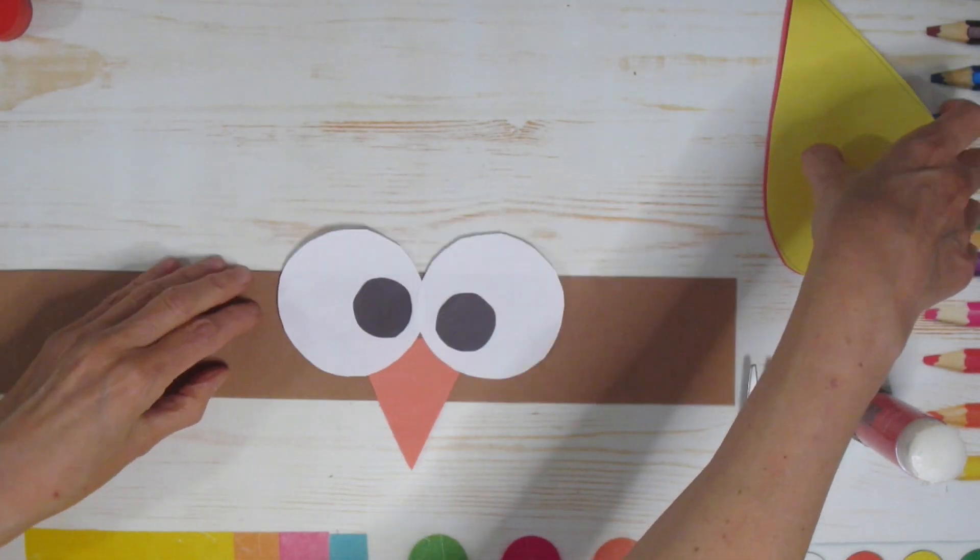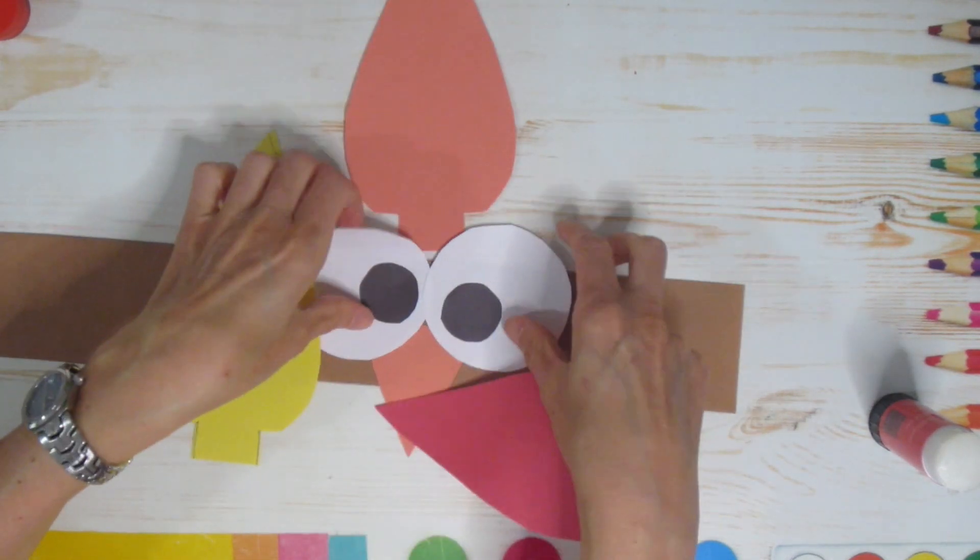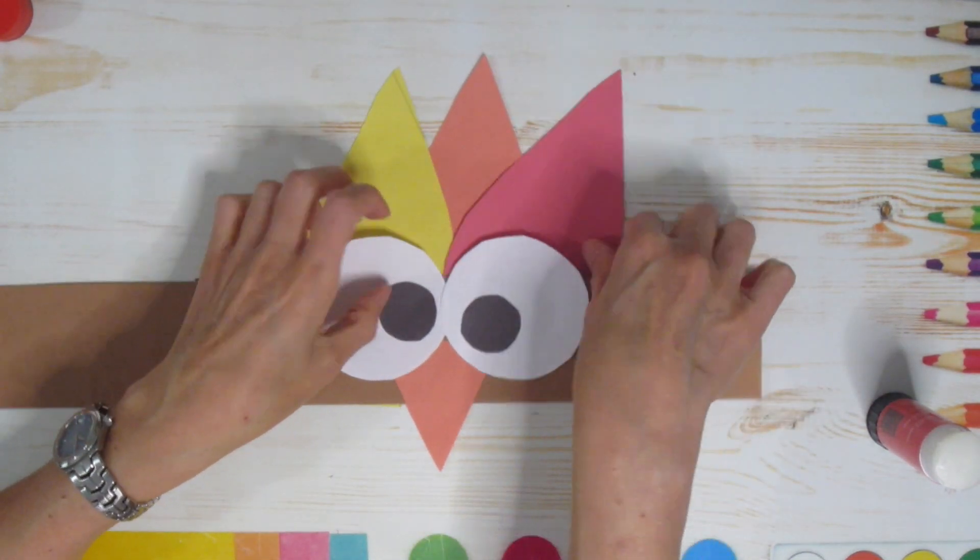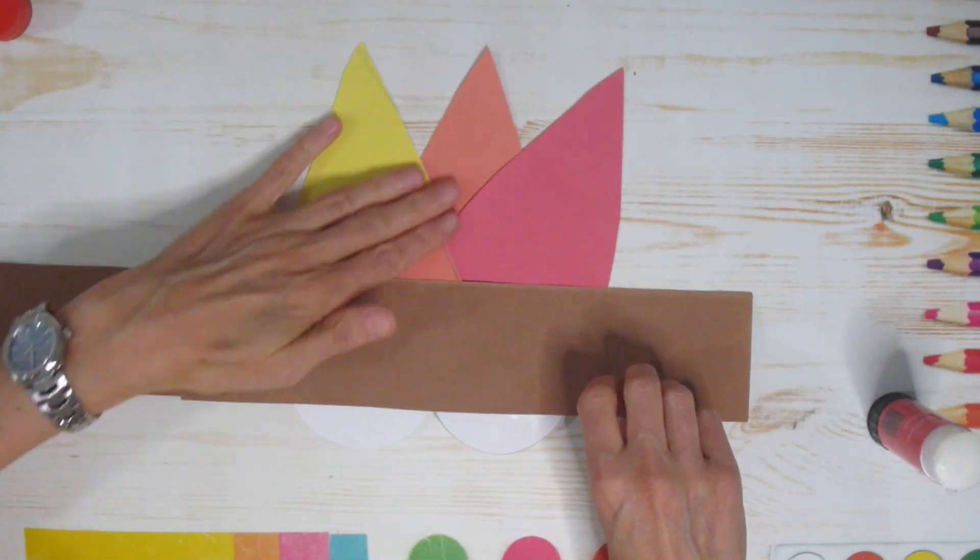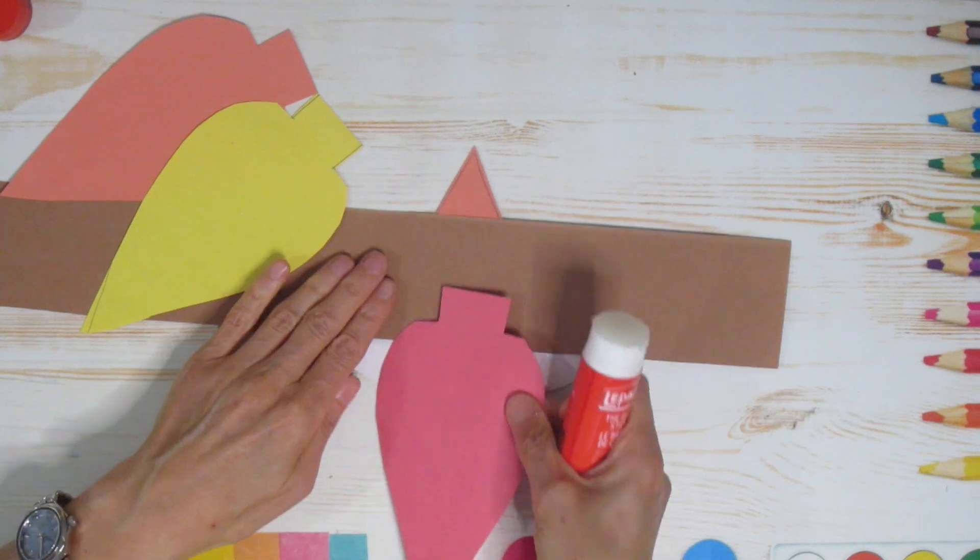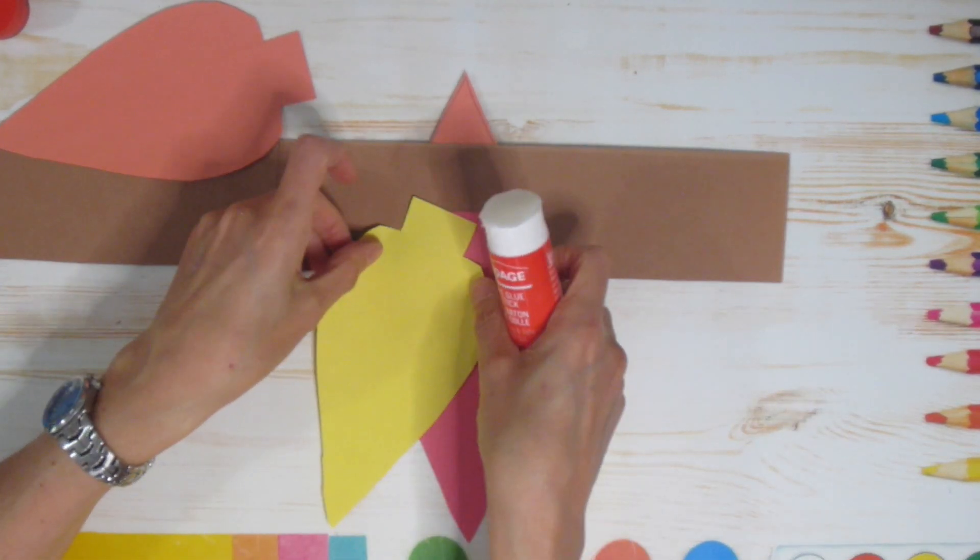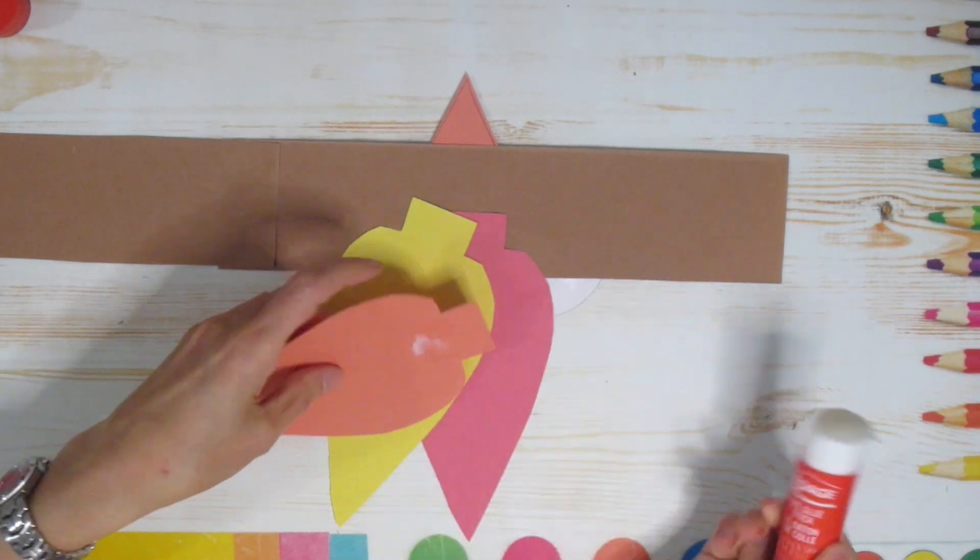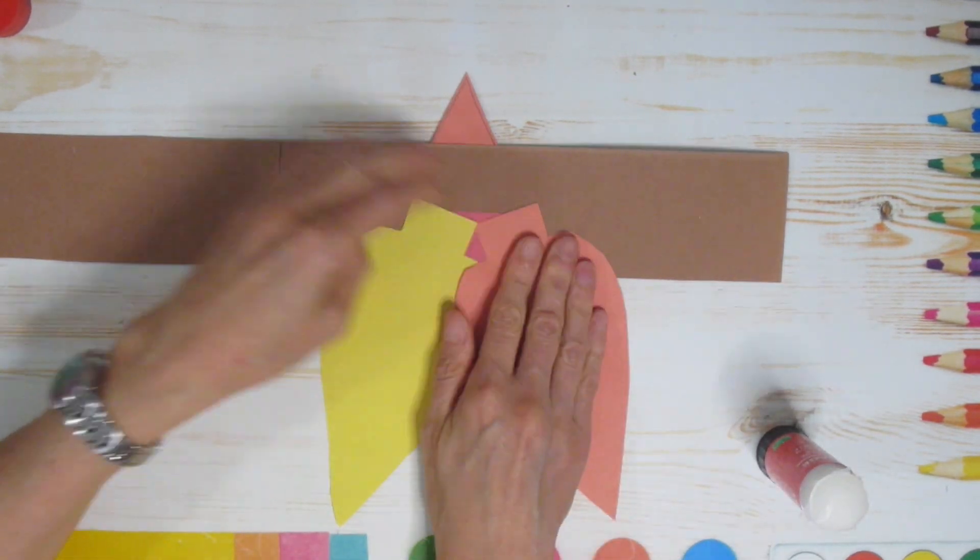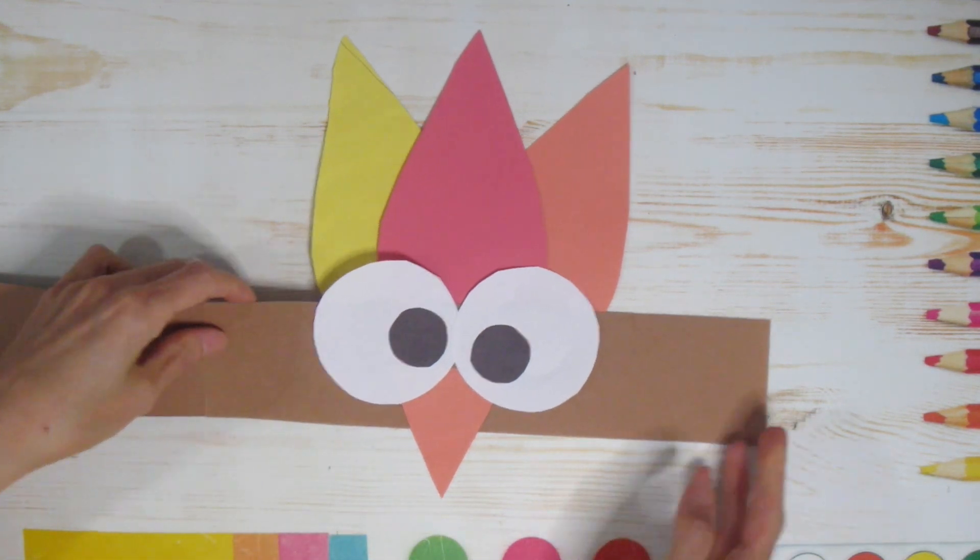Then it's time for our feathers. Now remember, I have three. Before I glue them, I just like to place them to make sure I like them, just making sure that everything looks okay. Then I flip that over and I will glue them down. They are going to come up on the opposite side of your beak. Once they are glued, I'm going to turn it over and we are ready to attach your hat.